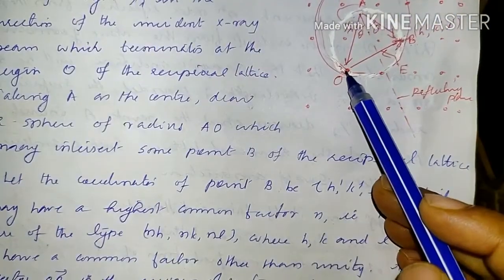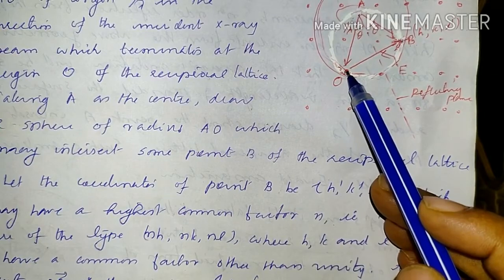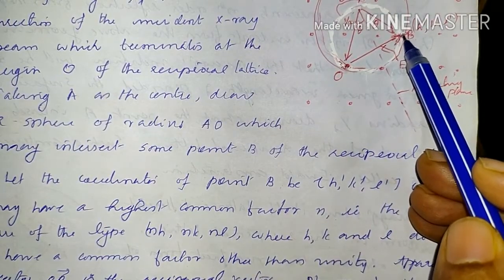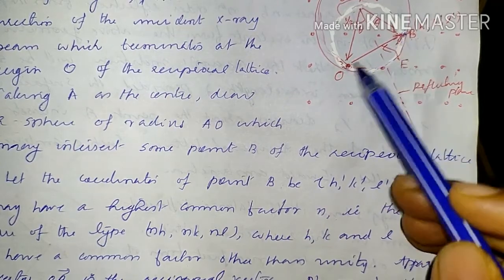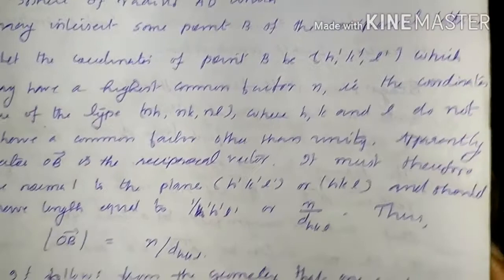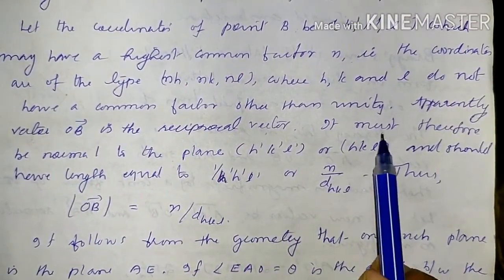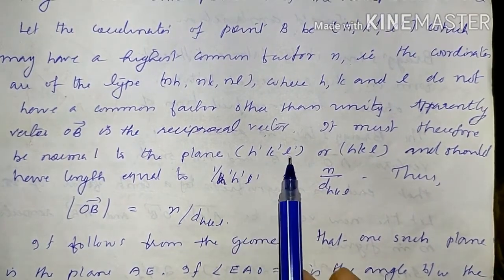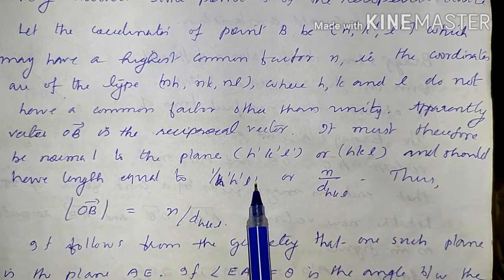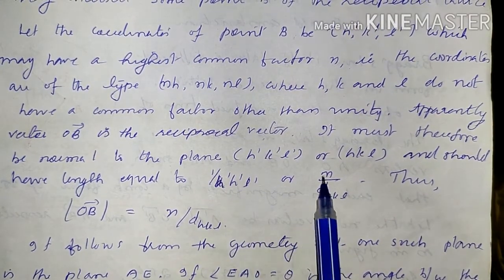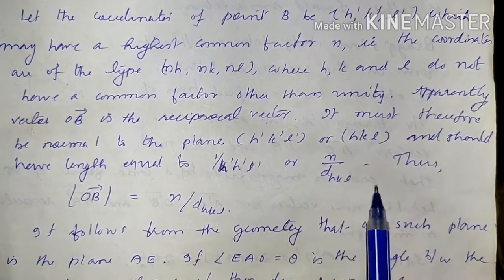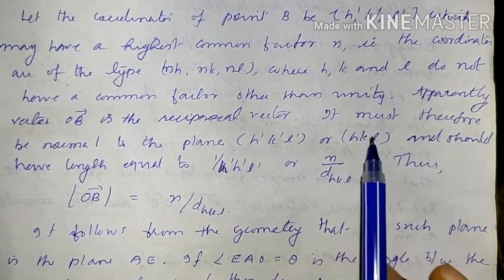Since both O and B are reciprocal lattice points, the vector OB is a reciprocal lattice vector. It must therefore be normal to the plane (H'K'L') or (HKL), and must have a length equal to 1/d_{H'K'L'} or N/d_{HKL}, where d_{HKL} is the distance between two parallel planes with Miller indices H, K, L. This is clear from the definition of reciprocal lattice points.